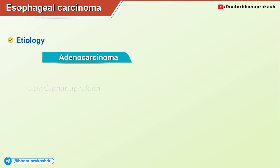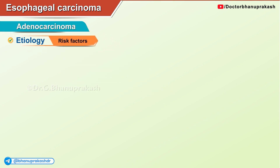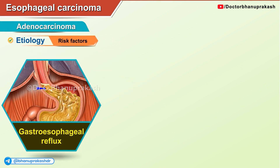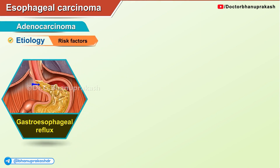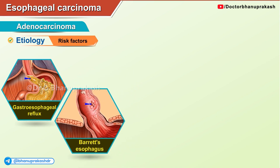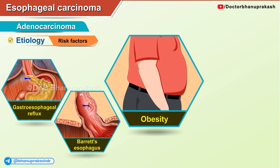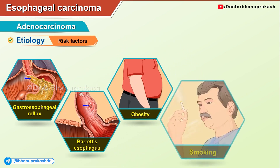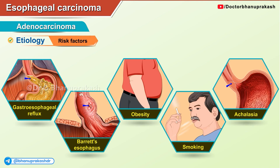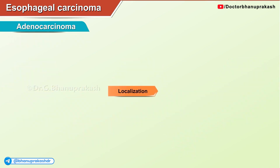Adenocarcinoma risk factors include gastroesophageal reflux, obesity, smoking, and achalasia. Its localization is mostly in the lower one-third of the esophagus.